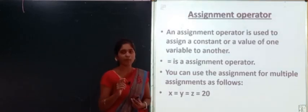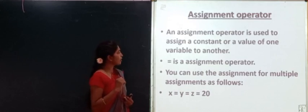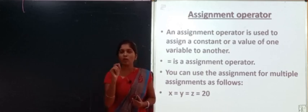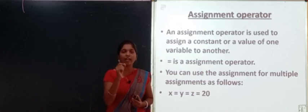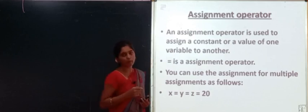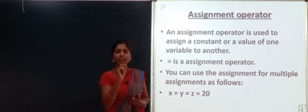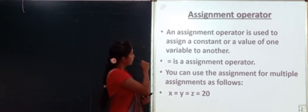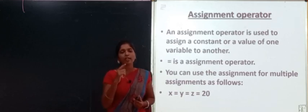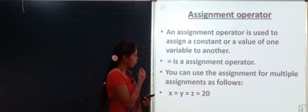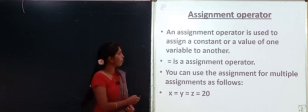The next one is assignment operators. An assignment operator is used to assign a constant or a value of one variable to another. For example, int a = 10 — the equal symbol assigns the value 10 to variable a. The equal-to symbol is the assignment operator, mainly used to assign a constant value to a variable. You can also use it for multiple assignment: x = y = z = 10.